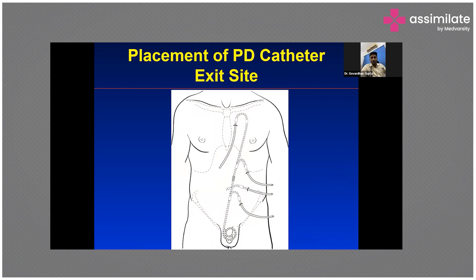The exit site depends on various factors such as abdominal obesity and the patient's preference — whether they wear a belt above or below the navel. If there is any stoma or other condition on one side, the exit site may be different. For patients who are not able to lie down, an eccentric exit site such as an infraclavicular exit site may be used.